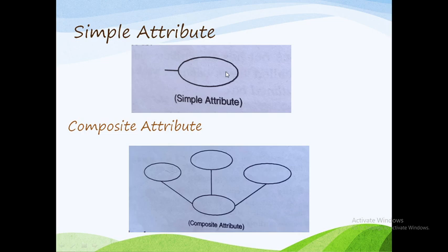Single atomic value is a simple attribute. The second type is composite attribute. An attribute that can be further divided into subparts is called a composite attribute. One attribute is further divided into some parts — that means it is a composite attribute. That is why we call it a composite attribute.